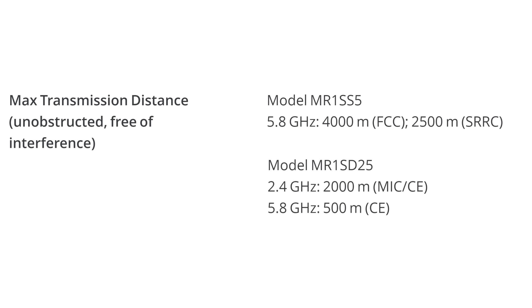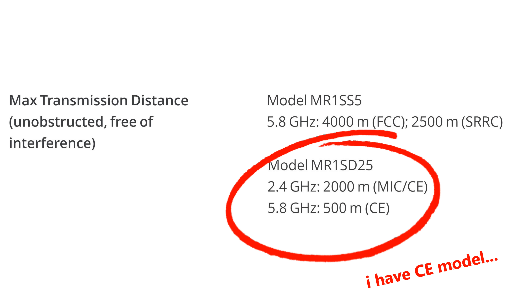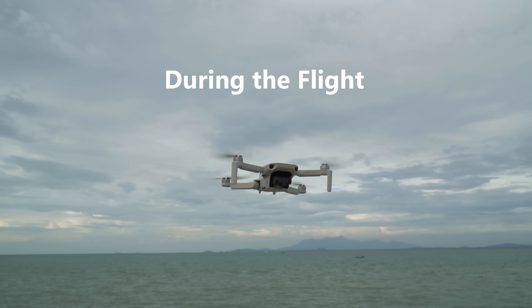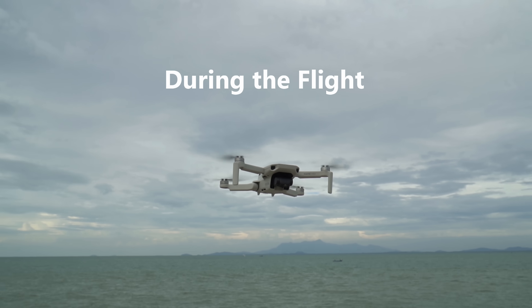These are the maximum transmission distances that you get with different models. There are two types, and I have the C model. And now we move on to tips during flight time.